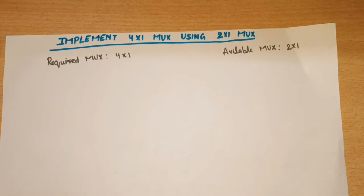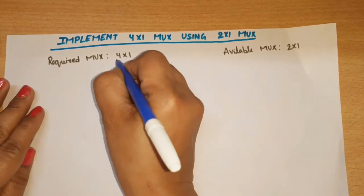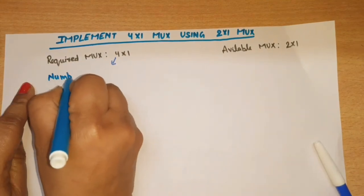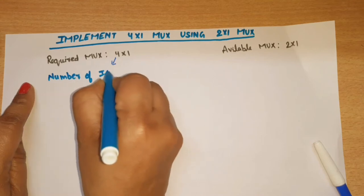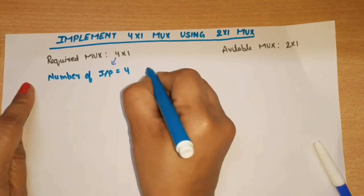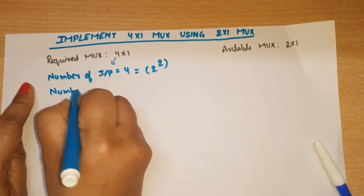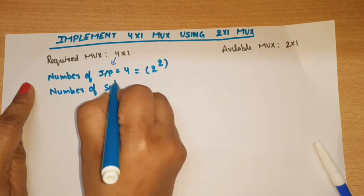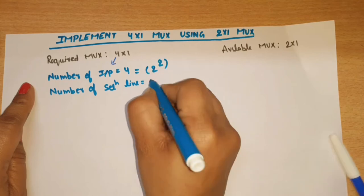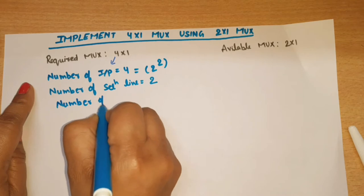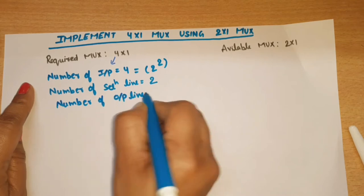First, we find the number of inputs in case of required MUX. Number of inputs for this case is equal to 4, which can be written as 2 raised to power 2. So number of selection lines is 2 raised to power 1, which means 2. And number of output lines is equal to 1.